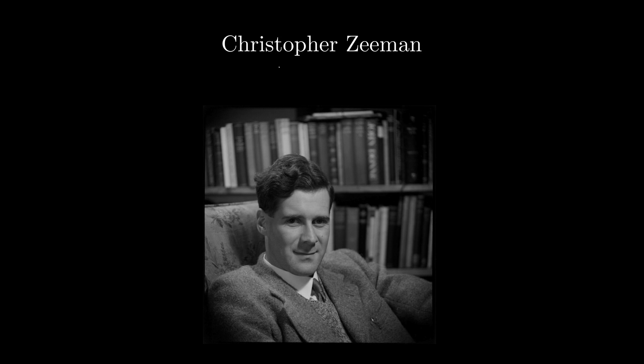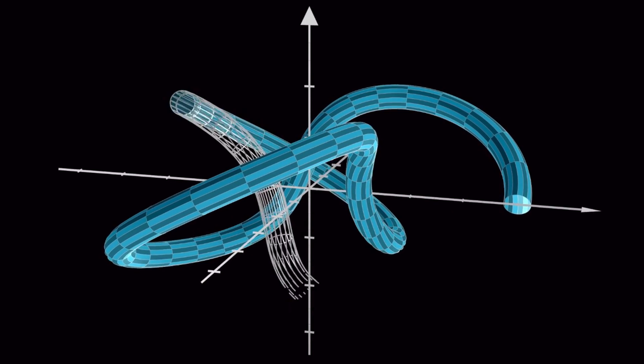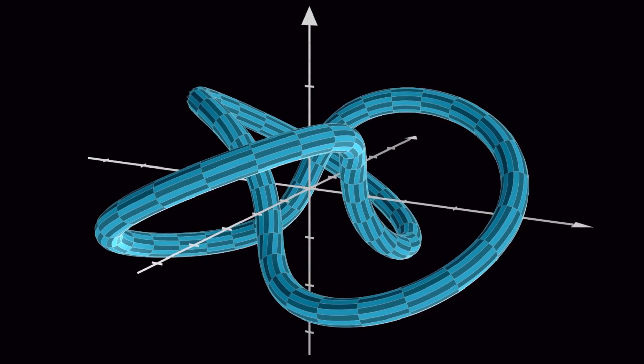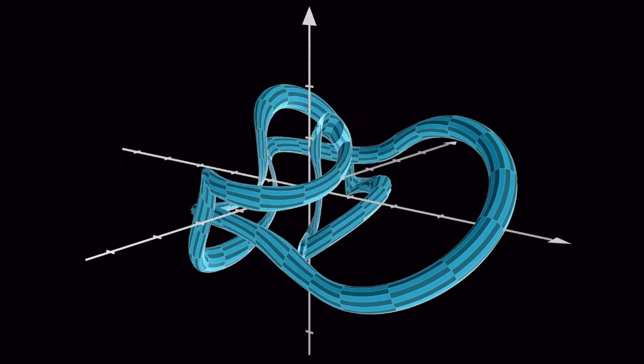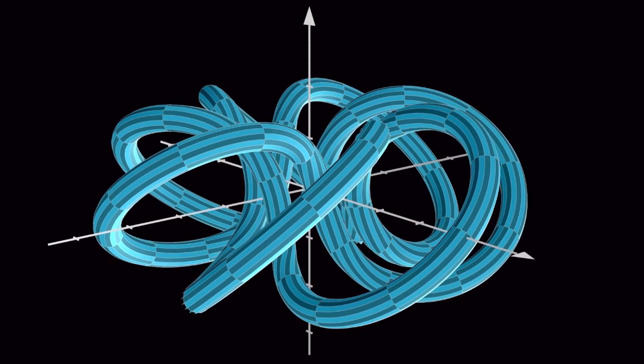When Christopher Zeeman was working on knot theory, he considered knots tied on a four-sphere. According to a famous story, he was trying to prove that one cannot untie a knot on a sphere for seven years, but was unsuccessful.